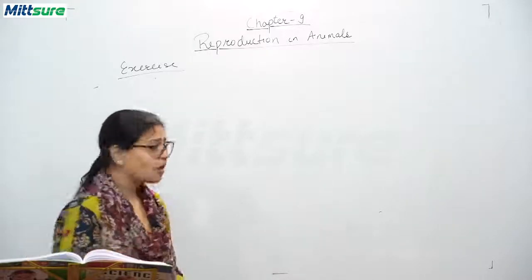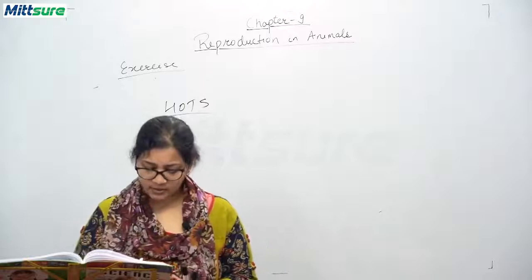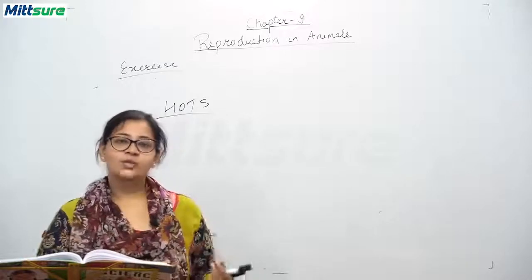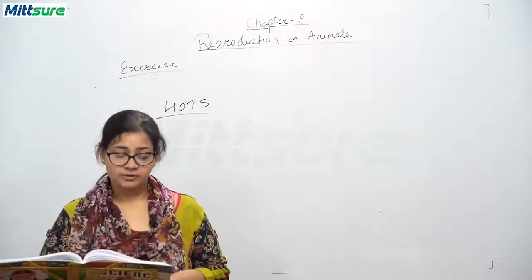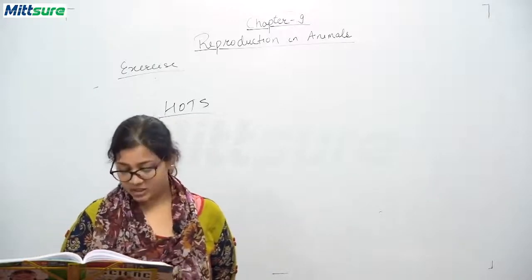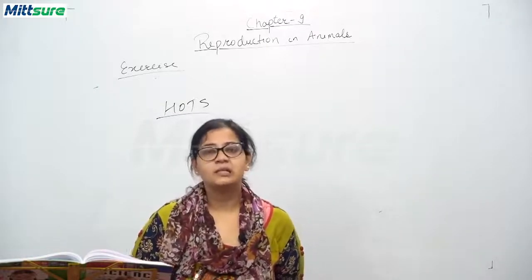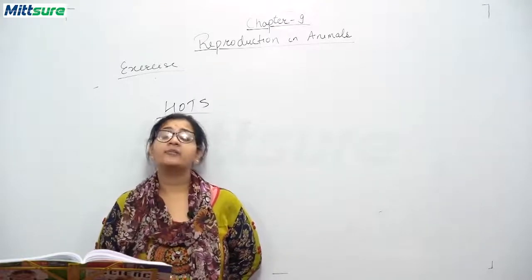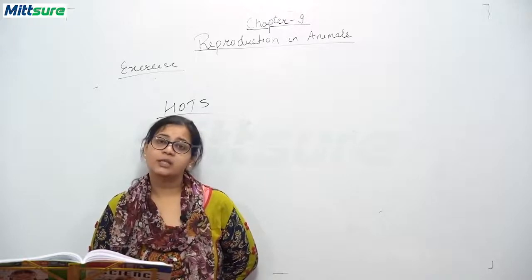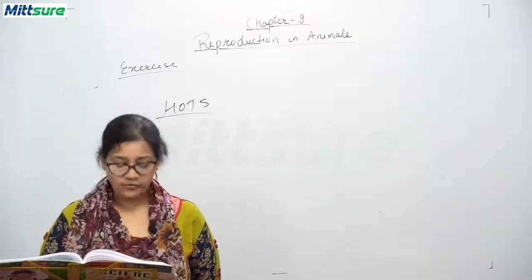Now we will be discussing HOTS — high order thinking skill questions. There are two questions. First, what will happen if there is no reproduction? There will be no life form available on earth for the biosphere to sustain. Second, why do animals which have an external mode of fertilization lay several eggs? Because in external fertilization, we do not know how many eggs can survive, how many fertilizations will occur, and other organisms or nature may destroy the eggs. That is why they lay a greater number of eggs.